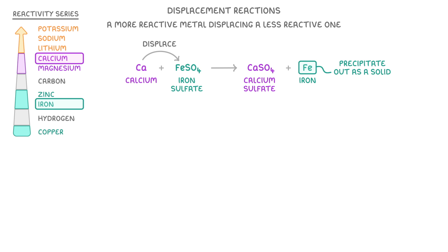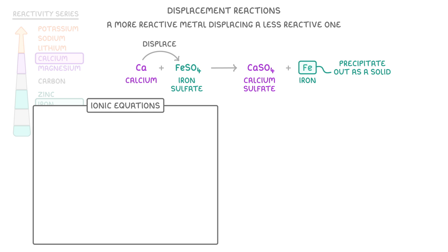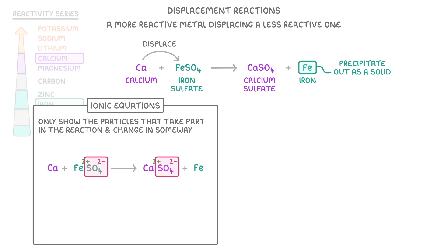For reactions like this, it's sometimes useful to write them as ionic equations, in which we only show the particles that actually take part in the reaction and change in some way. For example, if we showed everything here as ions, we can see that these sulphate ions stay as SO4 2- ions. They don't actually change or take part in the reaction by exchanging electrons. Because of this, we call them spectator ions and get rid of them from our equation. And what we have left is the ionic equation.